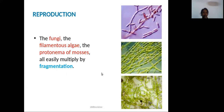Another type of asexual reproduction is fragmentation. Body fragments are formed, and each fragment grows into a fully grown individual. This is seen in fungi, filamentous algae, and moss protonema.